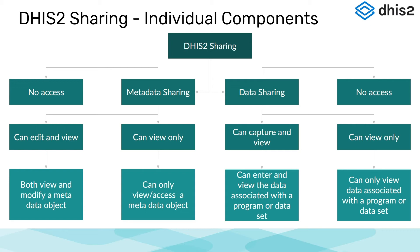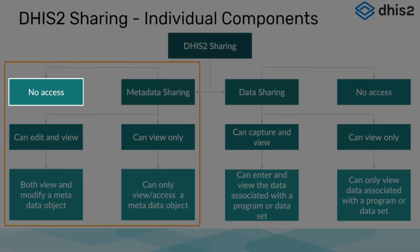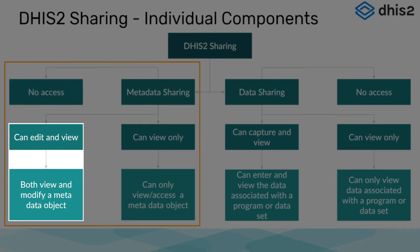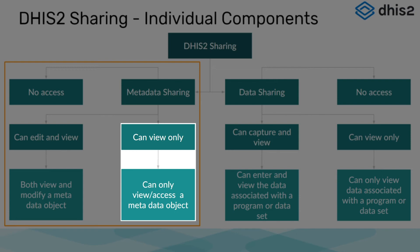For metadata sharing, there are three components. No access means that a group or user simply cannot see the object — this is useful when modifying public access to an object. Can edit and view allows a user or user group to both view and edit a metadata object; they can only edit the object if they have a user role allowing them to access the right apps in maintenance as well as to update the set of objects in question. For example, to edit a data element, they would need the data element shared with them using the can edit and view setting, and the user role would have to allow access to the maintenance app as well as the authority to update data elements. The last component is can view only, which allows a user or user group to view a metadata object within various DHIS2 apps, with the apps they have access to controlled by their user roles.